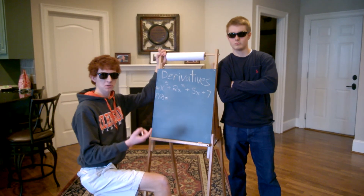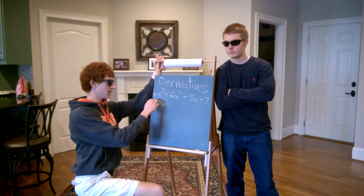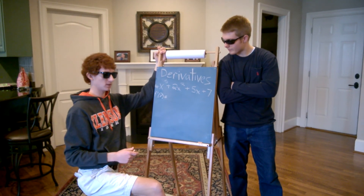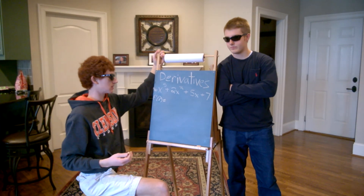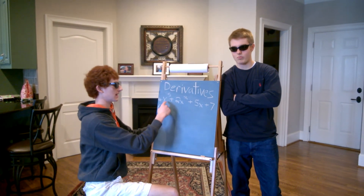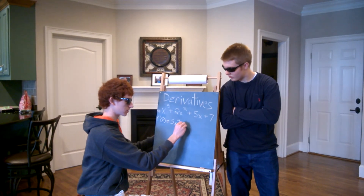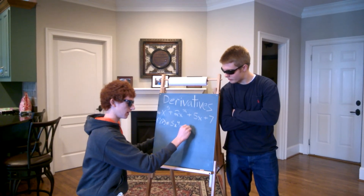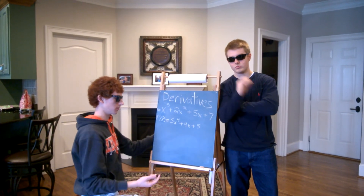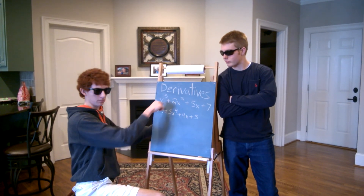There are two parts to calculus. The first part is derivatives. You're given a basic equation: f of x equals x to the fifth plus 2x squared plus 5x plus 7. To find the derivative, x to the fifth becomes 5x to the fourth, the next term becomes 4x, the 5x term becomes just 5, and all constants turn into 0. That is the derivative, and it will tell you the slope at any point for that equation.